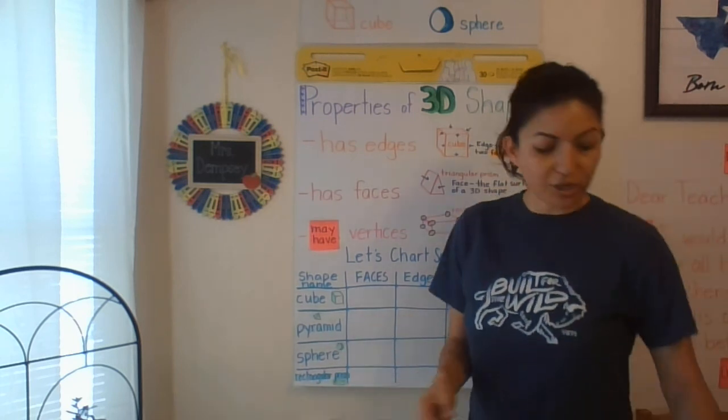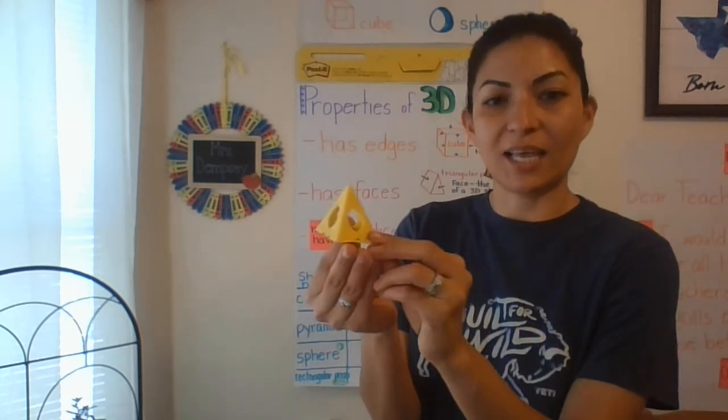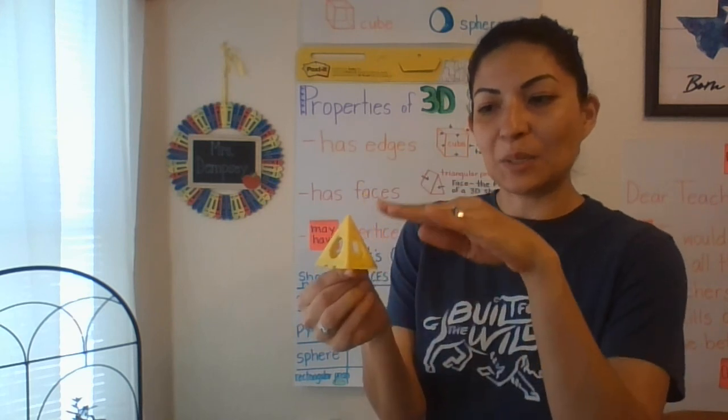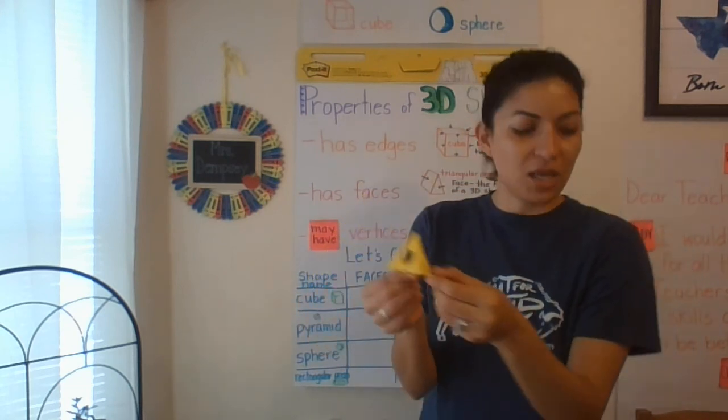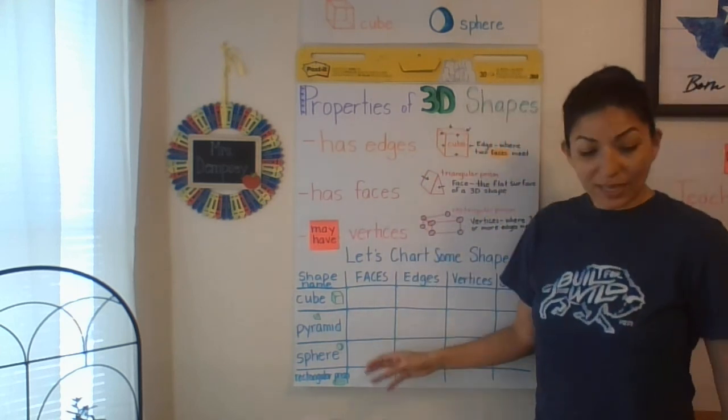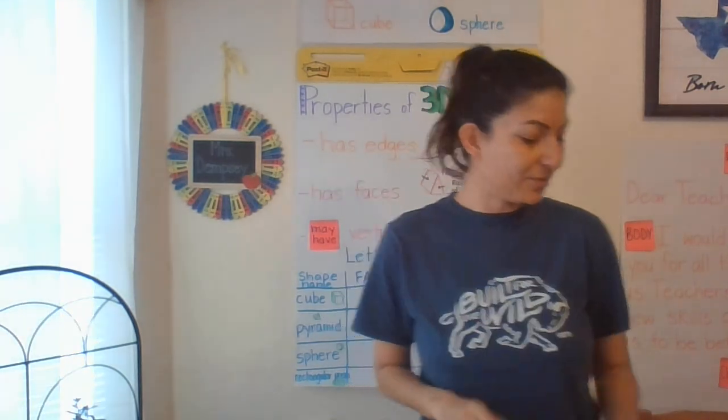Also, a pyramid. You saw earlier, I had Mr. Dempsey's painting pyramid. This is where he puts the wood or anything he wants to paint so that he doesn't get it on the floor. We have a sphere. Weezy's tennis ball is a great example of a sphere.